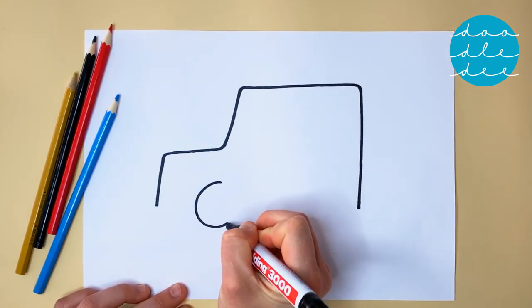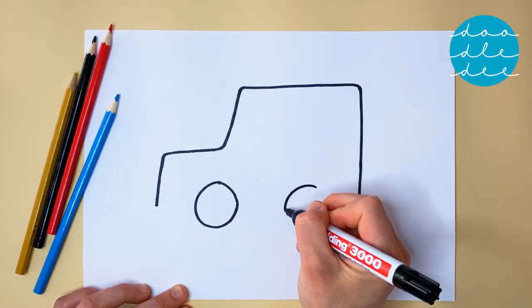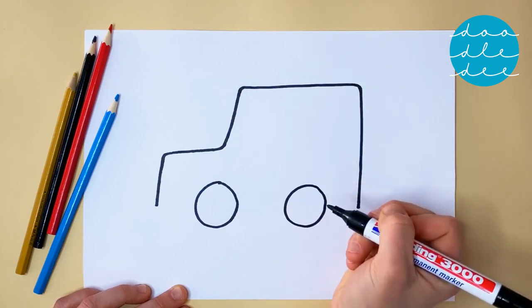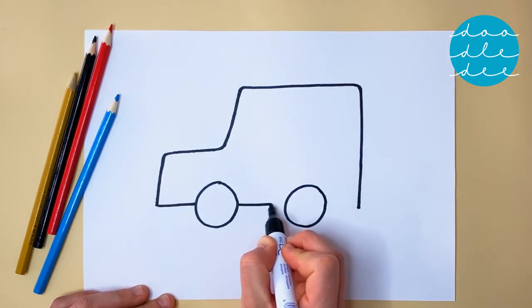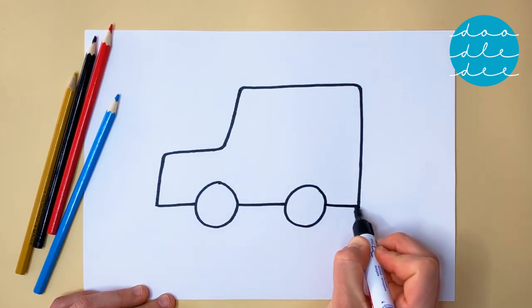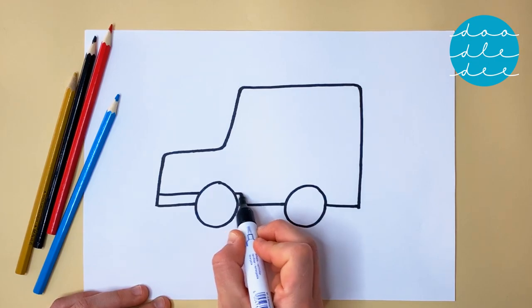Draw a circle for a wheel, and another. And a straight line all the way across and between the wheels. With another line for a striped bottom.